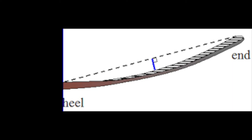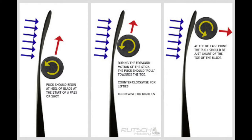Another important part of the stick is the curved blade attached to the end of it. The curved blade is responsible for putting pucks on target, as the curvature creates a rotational force in the puck called the gyroscope effect.